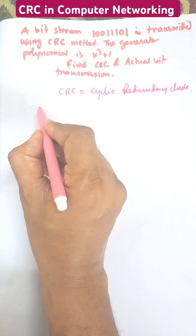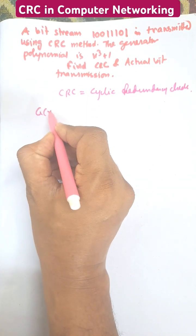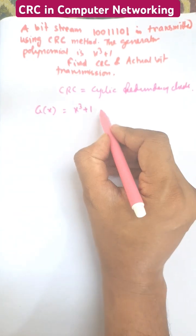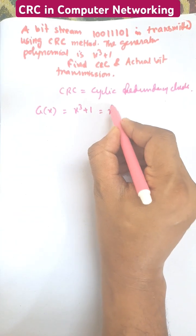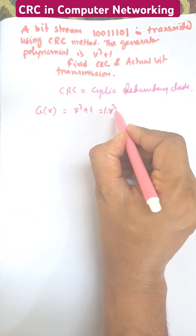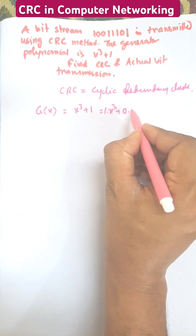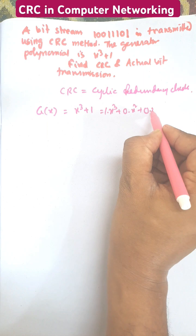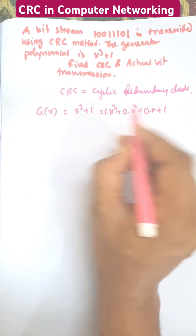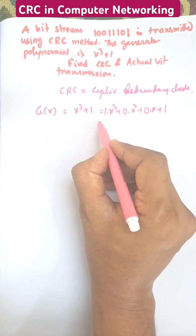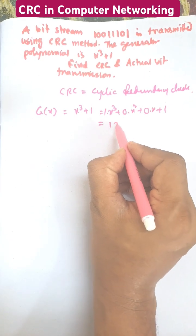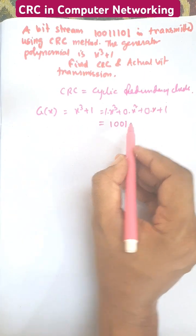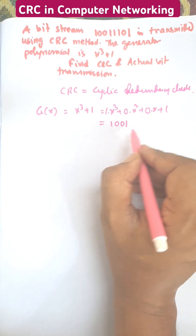Generator polynomial g(x) equals x³ plus 1. We need to find the number of bits: x³ plus 0x² plus 0x plus 1, so the generator polynomial is 1001, which is known as the divisor.